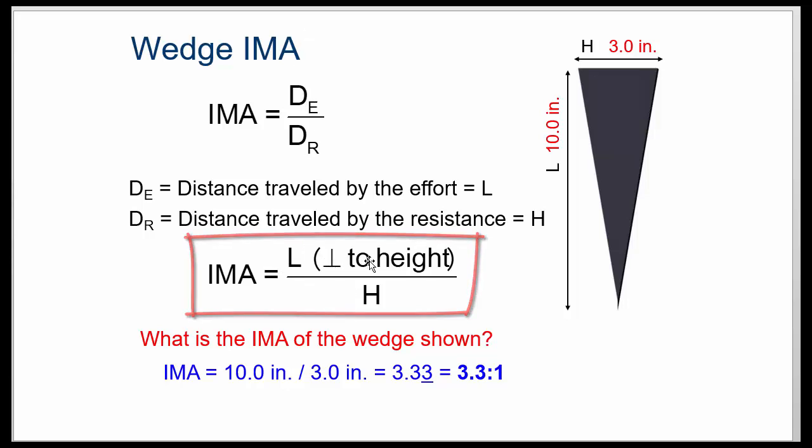It's the distance of the effort, which is in this case 10. It's not this edge. It's the perpendicular length divided by the height, which is 3. The IMA, 10 divided by 3, is 3.33. It's 3.3 to 1.